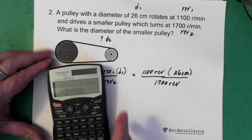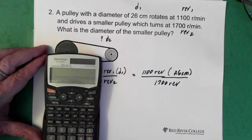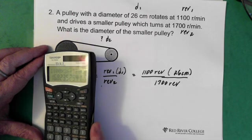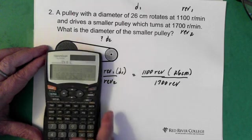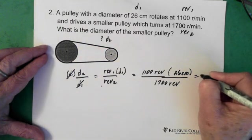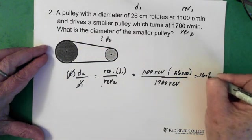Now we just go to the calculator. 1100 times 26 divided by 1700 equals 16.7. So 16.7.